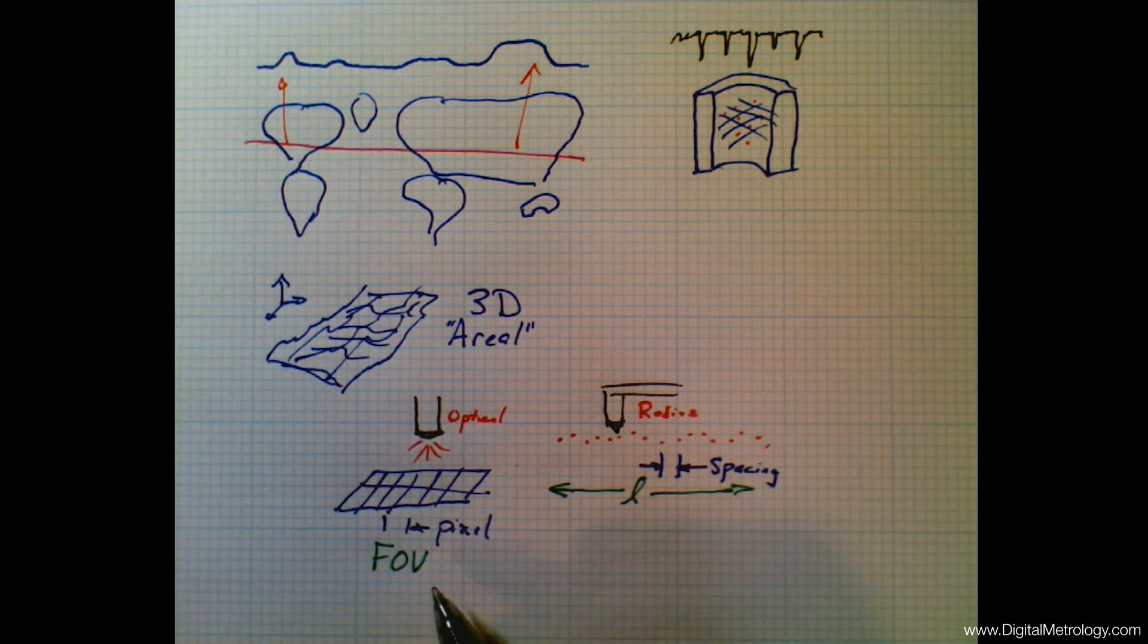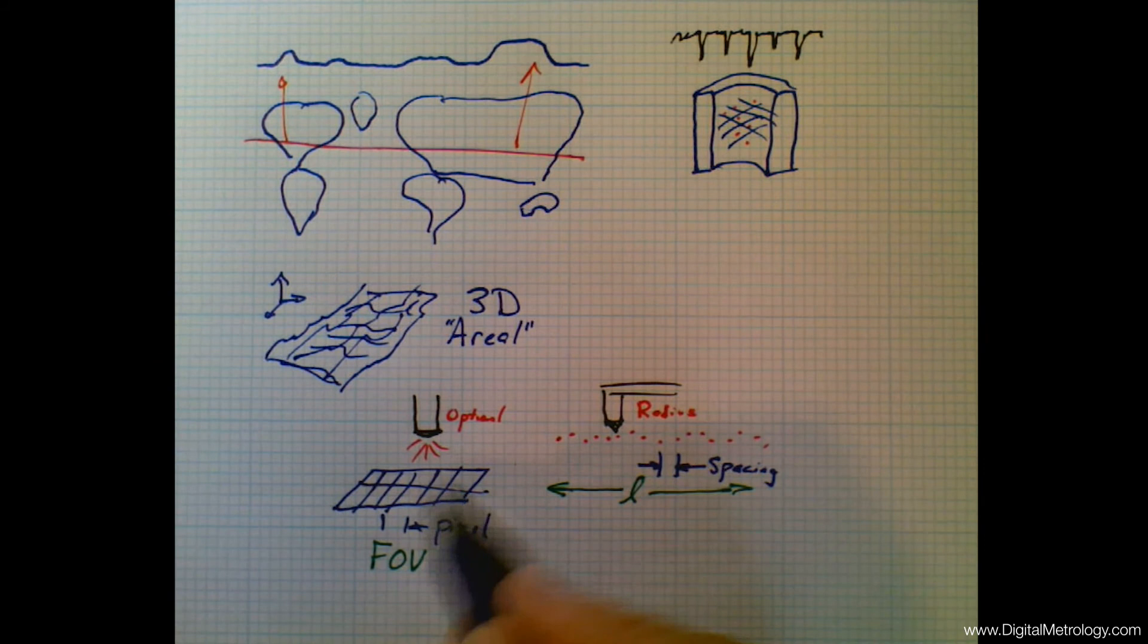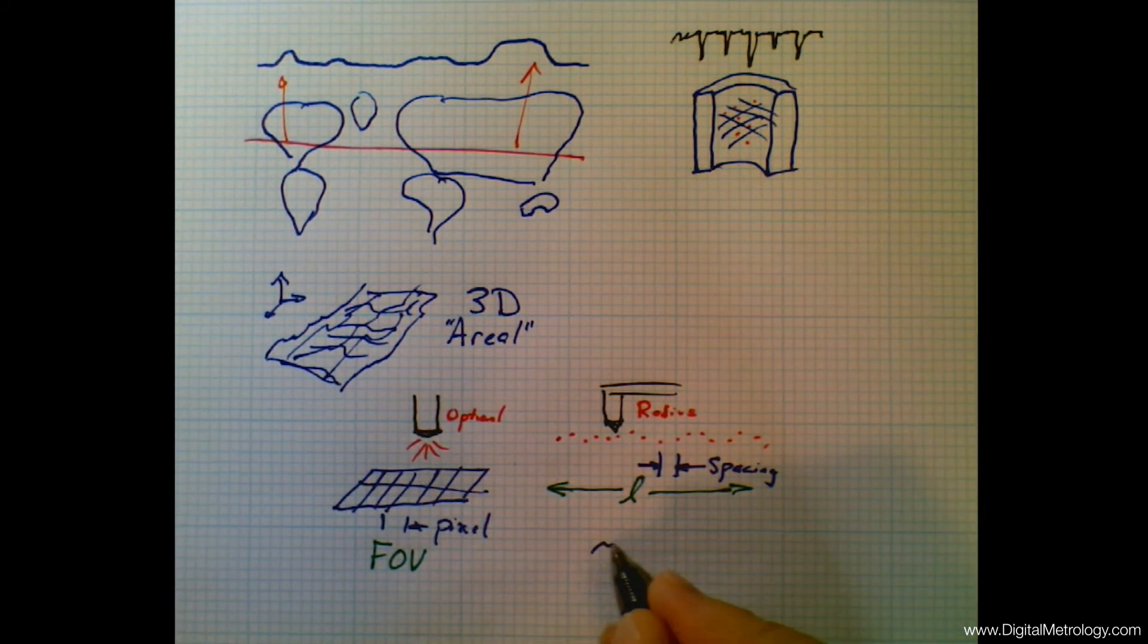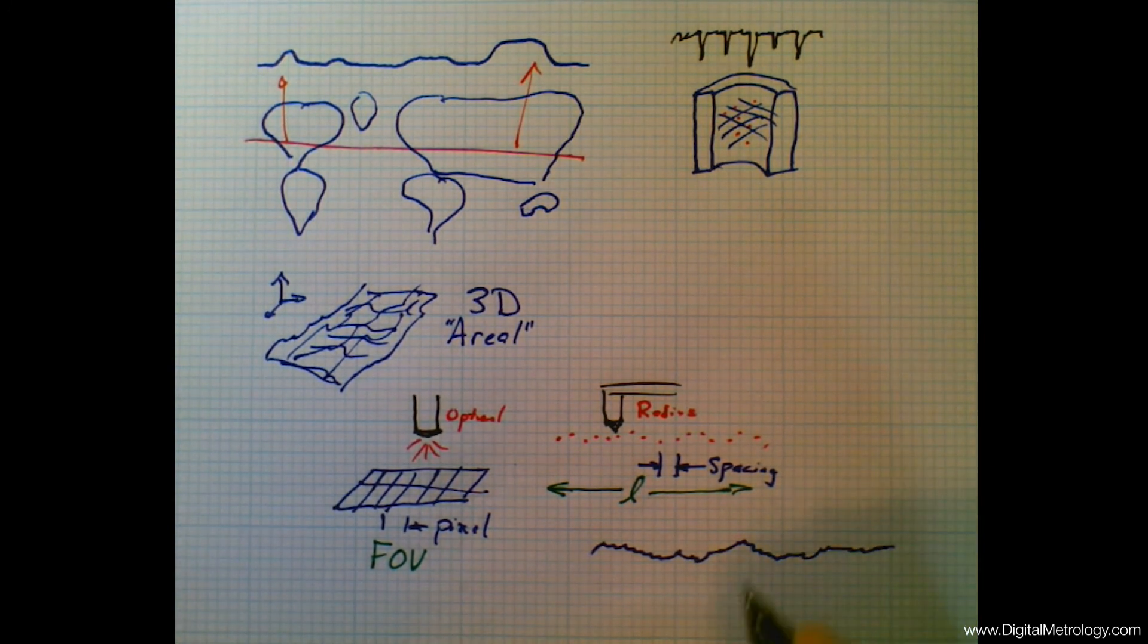So if we are looking, for example, at a problem of distinguishing porosity from scratches, we can move into a three-dimensional or aerial space. But on the other hand, what if we're interested in something like waviness? A stylus instrument can make a long measurement very quickly and help us understand things like waviness, where the optical instrument might struggle with this.